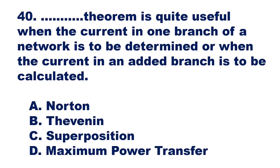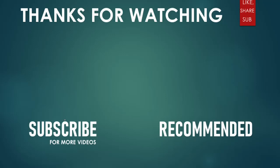Question 40: Dash theorem is quite useful when the current in one branch of a network is to be determined, or when the current in an added branch is to be calculated. The answer is Thevenin's theorem, option B. Thevenin's theorem is quite useful for determining current in one branch or a newly added branch. Thank you, students.